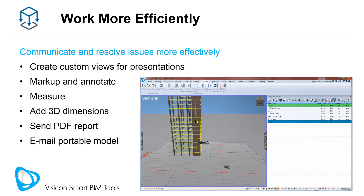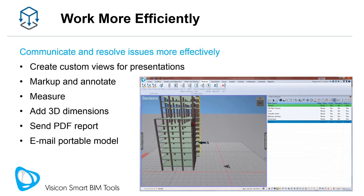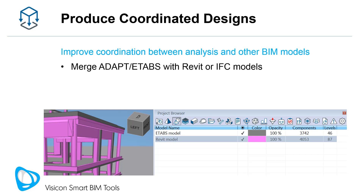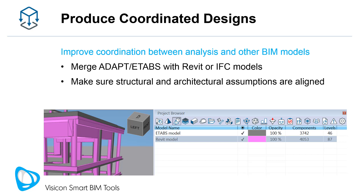Alternatively, email your design project as a portable Visicon file. Be proactive and produce more coordinated designs by checking your analysis model geometry against that of other disciplines. It is easy to merge your ETABS or ADAPT models with other BIM models that are in Revit or IFC format. From an internal validation perspective, make sure your structural assumptions are still aligned with the Revit model you will use to produce construction documents.